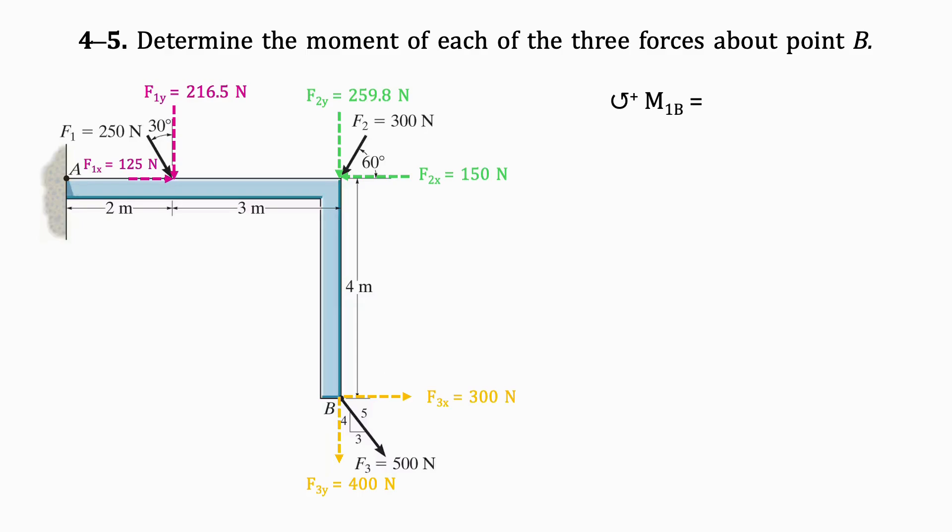Next we'll get the resultant moment of each force about point B. To find the moment of F1 about B, we will look at both the X and Y components of the force.